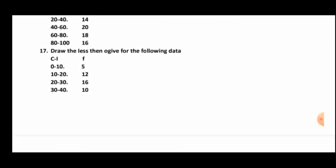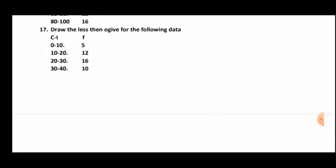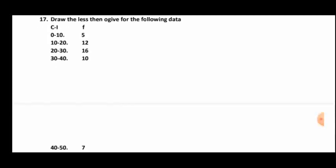The next question: draw the less-than ogive for the following data. There will be two types of ogive — more-than ogive and less-than ogive. Graph, ogive, construction of a tangent, and construction of a triangle will be there — learn all these 4 topics. Ogive is for 3 marks.